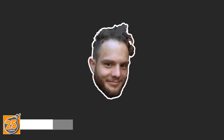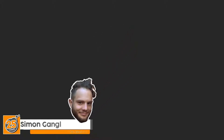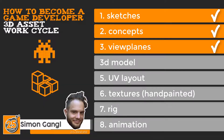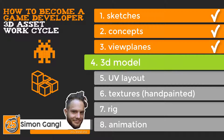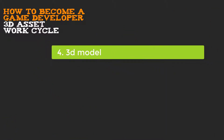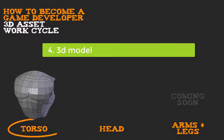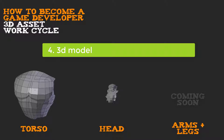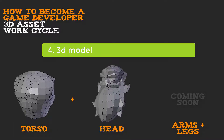Hey game devs, welcome back. This tutorial is part of a series on how to become a game developer. Currently I show you how to create game assets like a 3D character. Last time we started modeling the torso — if you missed that, click the link in the description below. Today we start modeling the head of our 3D character and combine it with the torso mesh. I will show you all the necessary shortcuts step by step. So let's start.